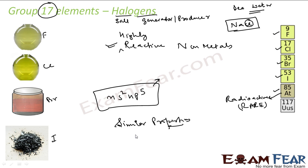To summarize: Group 17 elements are called halogens, derived from the Greek word meaning salt generator. Most of these elements are found in seawater in the form of soluble salts, which is why they are called salt generators.